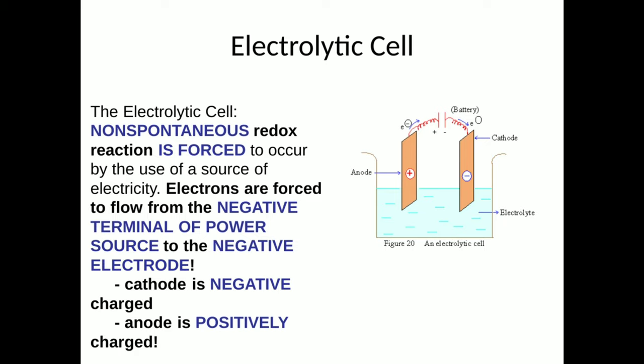Now, there are many similarities in all electrochemical cells, like AN-OX and FAT-RED-CAT. But the biggest difference is the charge of the electrodes switch in an electrolytic cell. The cathode is negatively charged, and the anode is positively charged. That is because the battery forces the charge. This is a non-spontaneous reaction, where the battery is in charge.